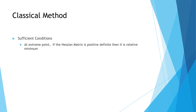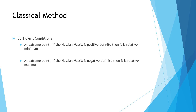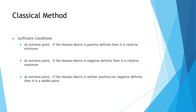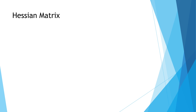The sufficient conditions are: at an extreme point, if the Hessian matrix is positive definite, then it is a relative minimum; if the Hessian matrix is negative definite, then it is a relative maximum; and if the Hessian matrix is neither positive nor negative definite, then it is a saddle point. There are new terms here — Hessian matrix, positive definite, negative definite, and saddle point — which we will look at in the next slides.